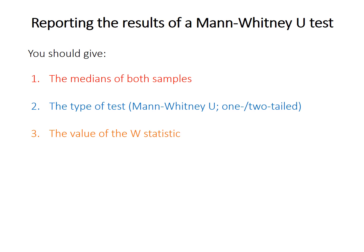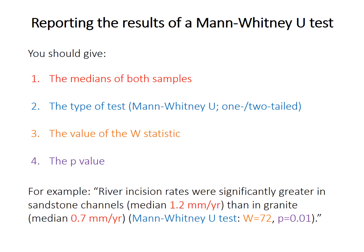Report the value of the W statistic, noting that it will differ depending on the order you input the samples. Of course, always report the p-value. Here's an example of how you might report results for a Mann-Whitney U-test.